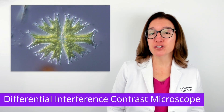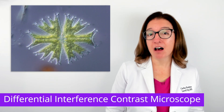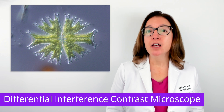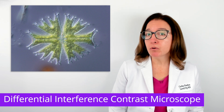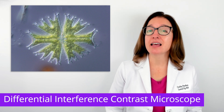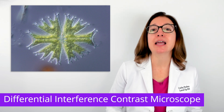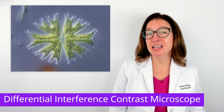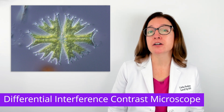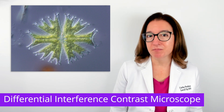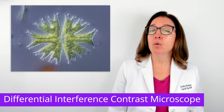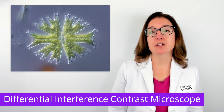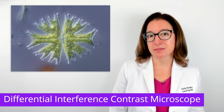A differential interference contrast microscope, or DIC microscope, uses polarized light that is split into two beams by a prism. This produces an image that appears 3D. This type of microscope would also be useful for observing living, unstained organisms.